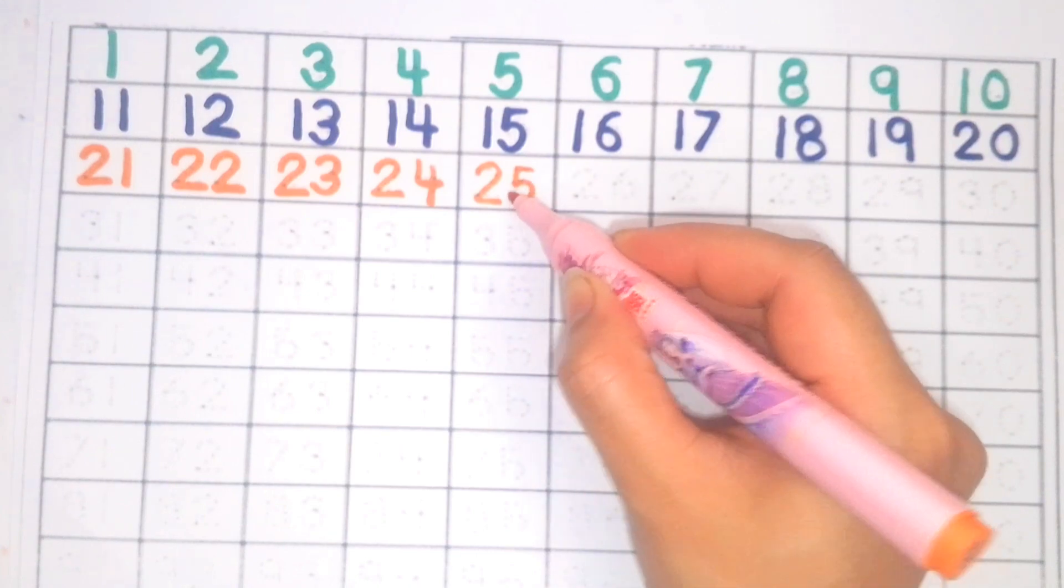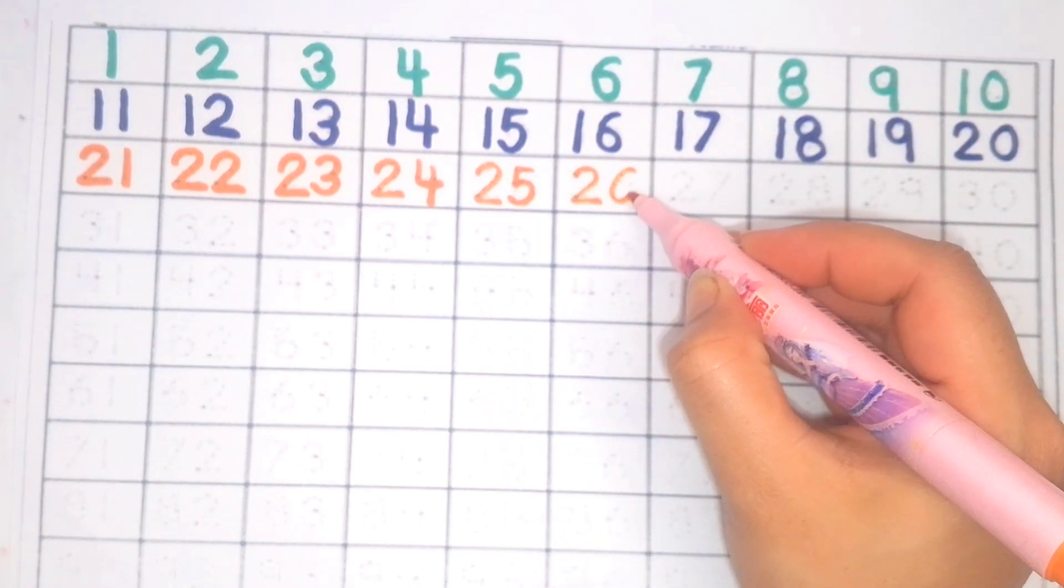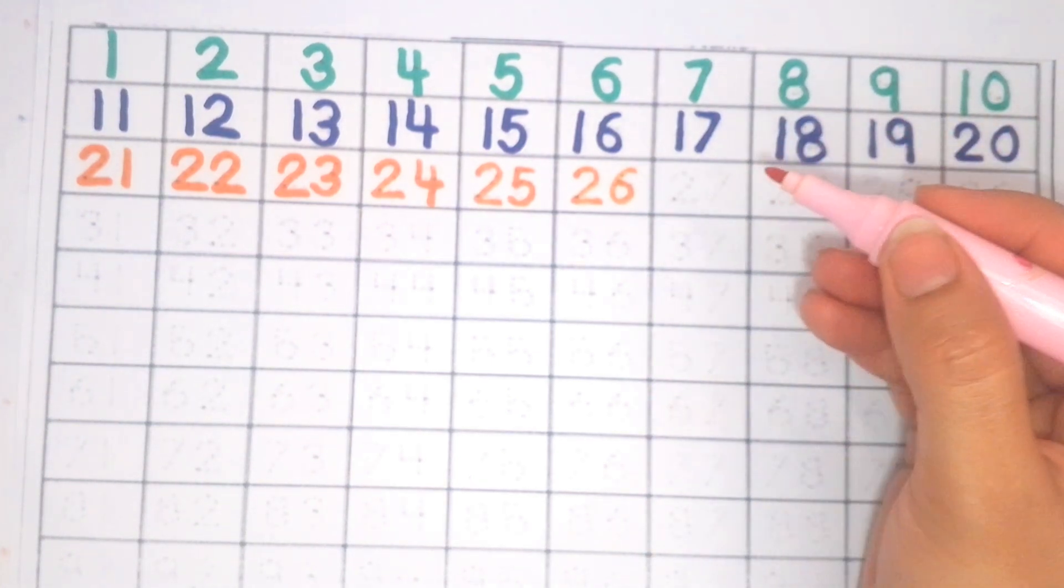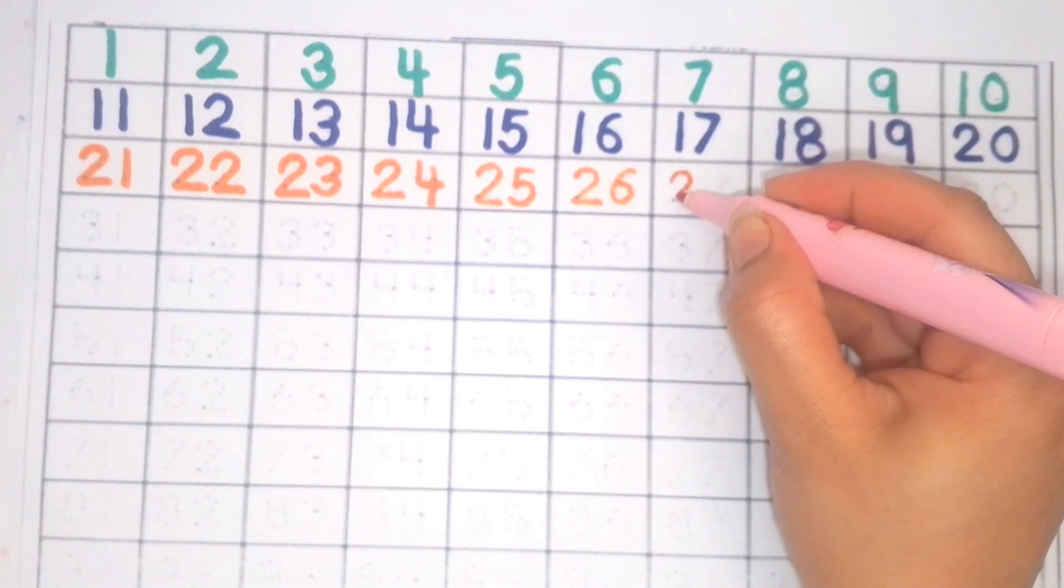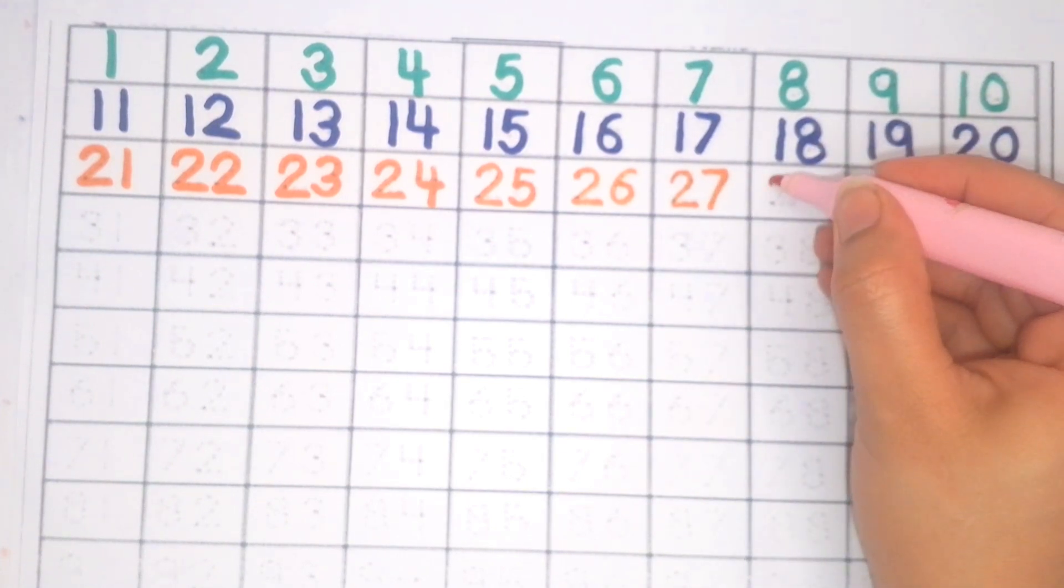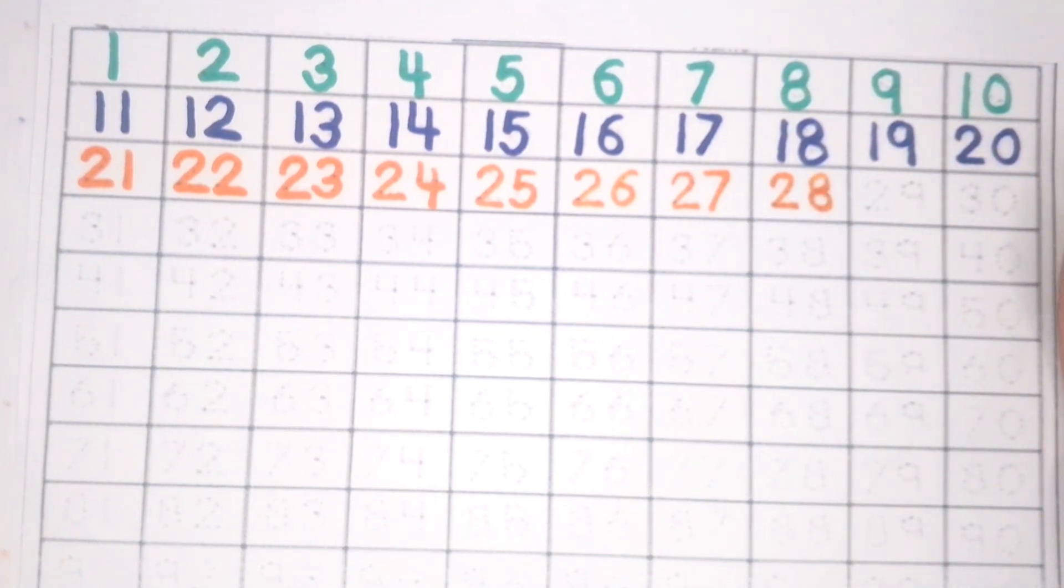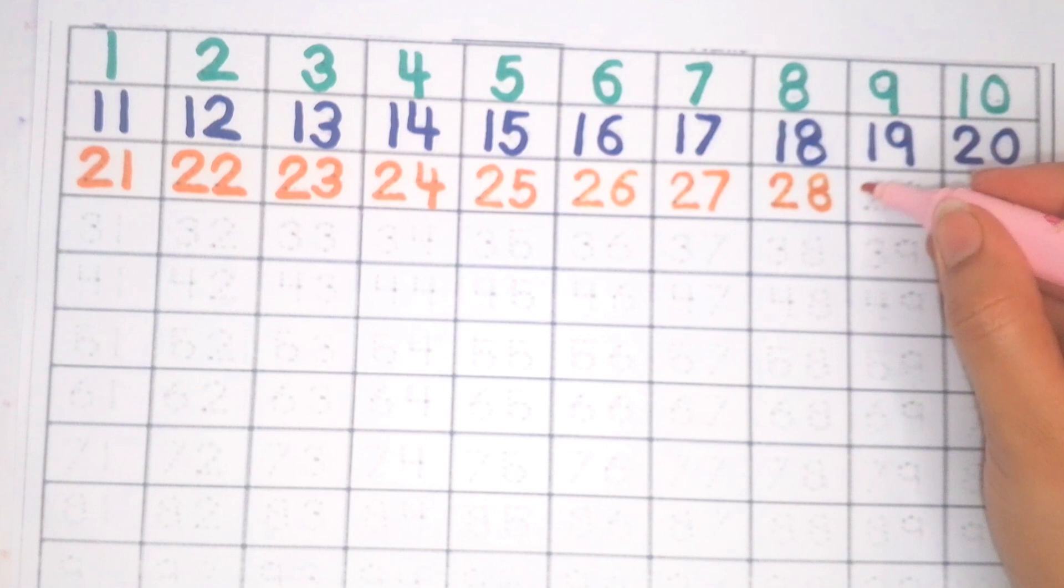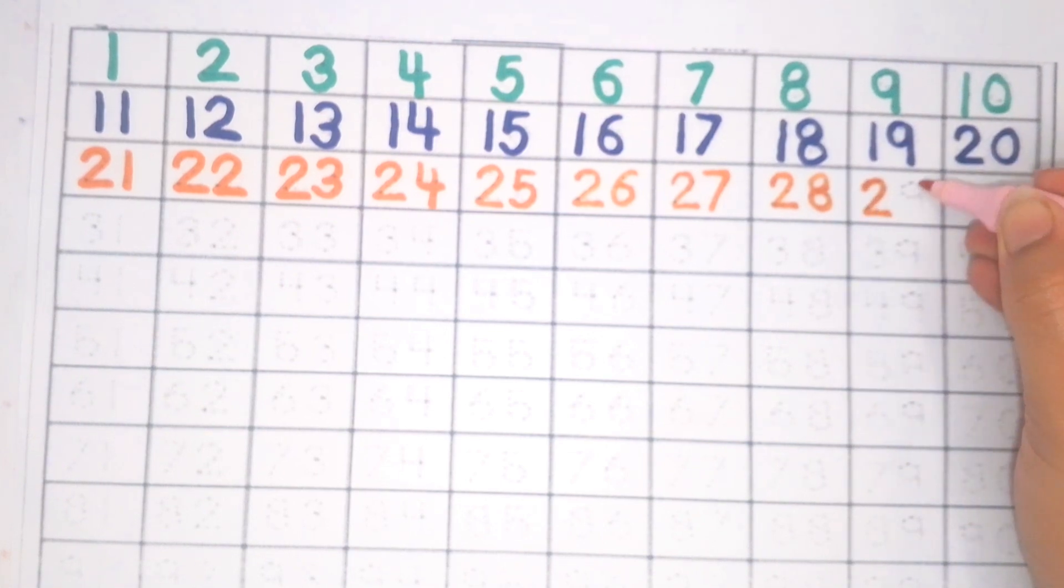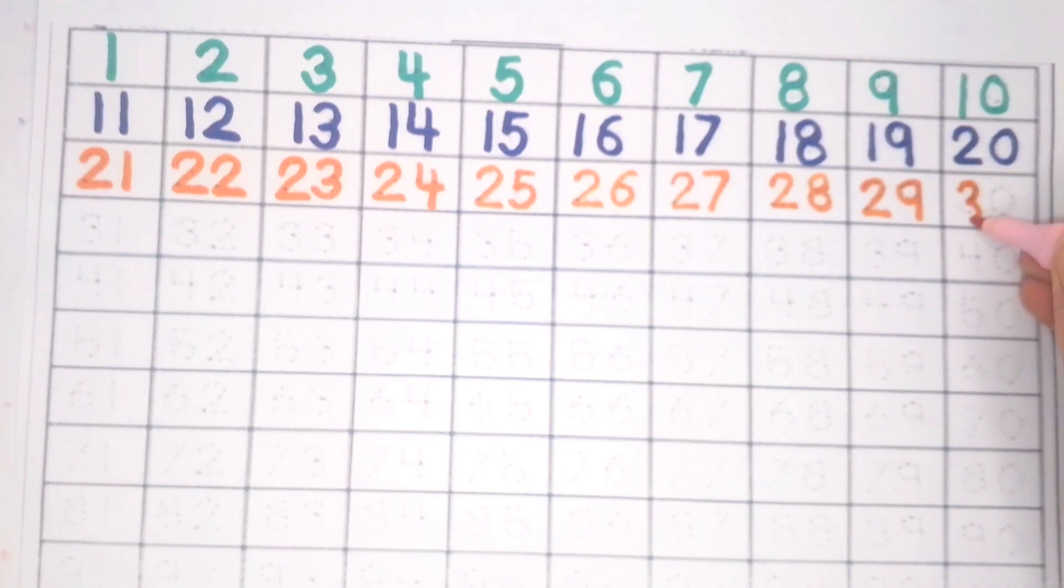Two five twenty-five, two six twenty-six, two seven twenty-seven, two eight twenty-eight, two nine twenty-nine, three zero thirty.